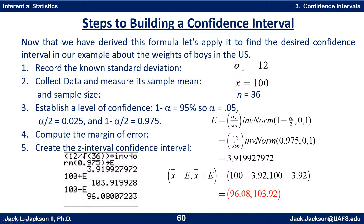We record the known standard deviation, collect data, measure the sample mean x-bar, and note the sample size of 36. Now we establish a level of confidence: 1 minus alpha equals 0.95, or 95%. So alpha equals 0.05, alpha over 2 equals 0.025, and 1 minus alpha over 2 — equivalently, 1 plus the confidence level divided by 2 — equals 0.975. The value 0.975 is important; the easiest way to find it is to take 1.95 and divide by 2.